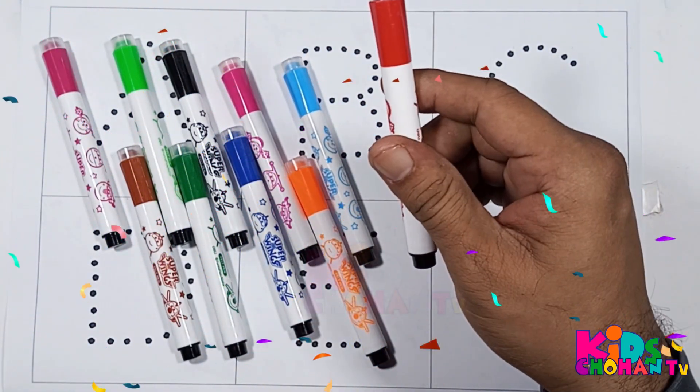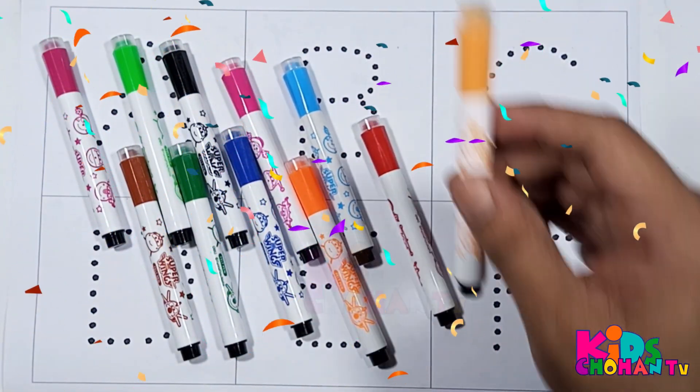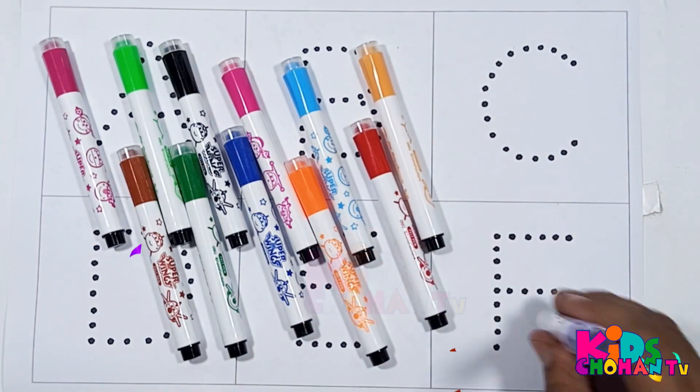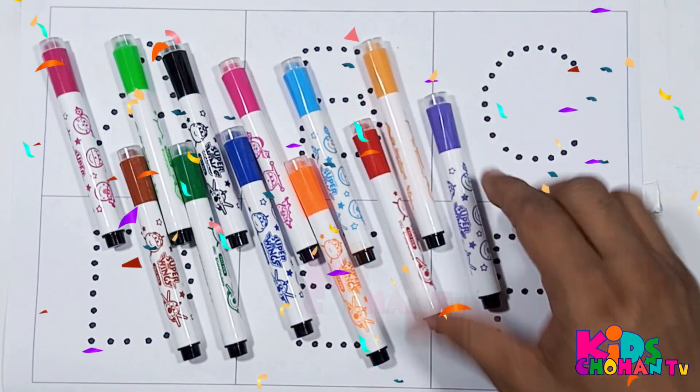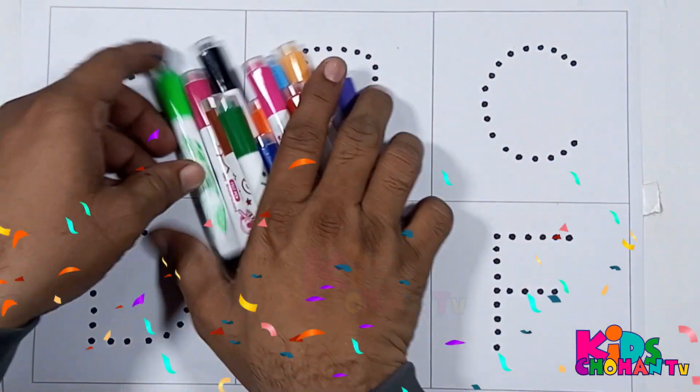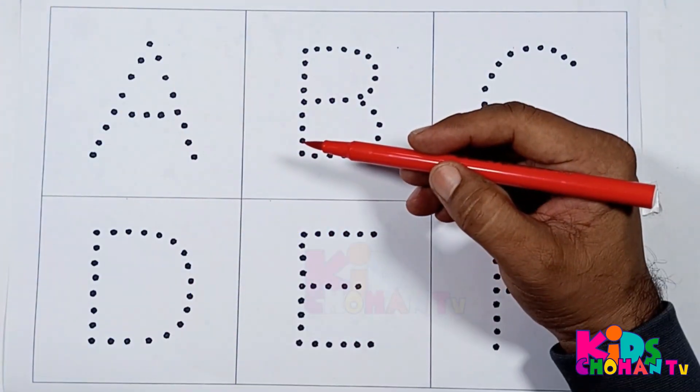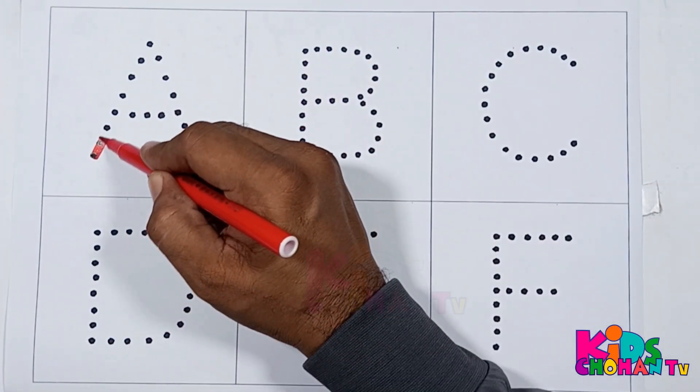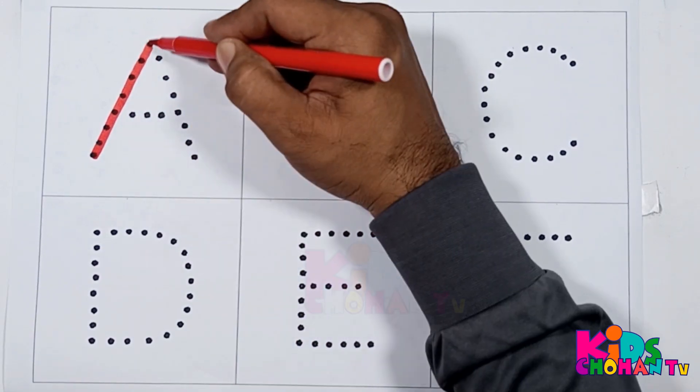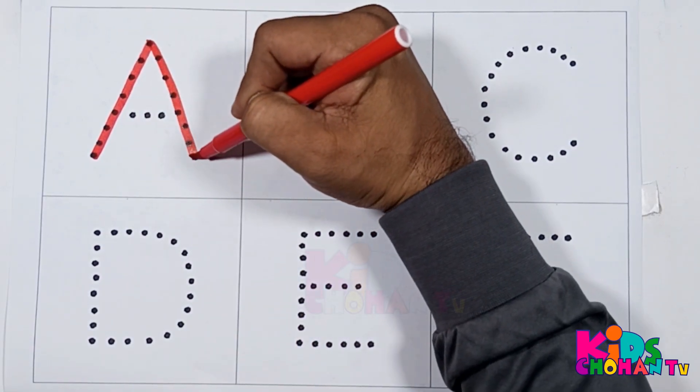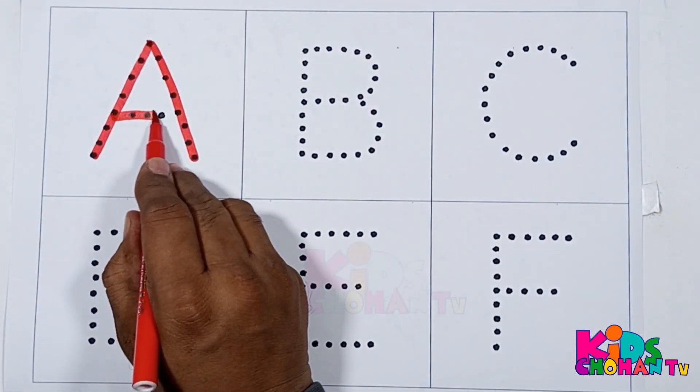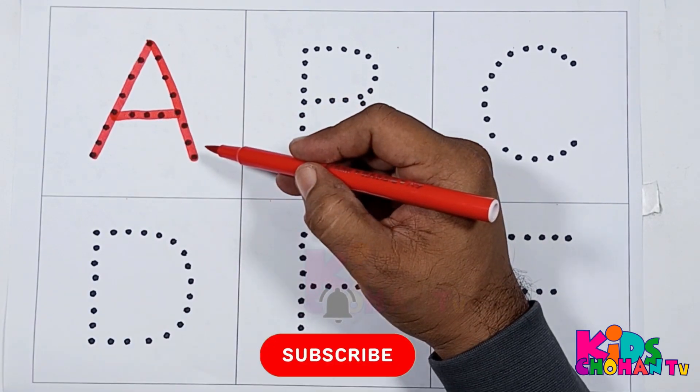Red color, yellow color, violet color, red color. Kids, we are tracing capital letter A with red color. A for apple.